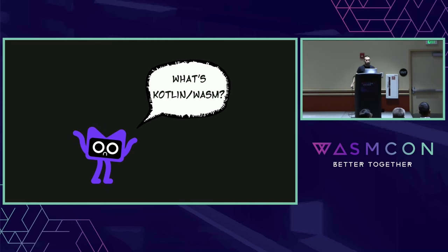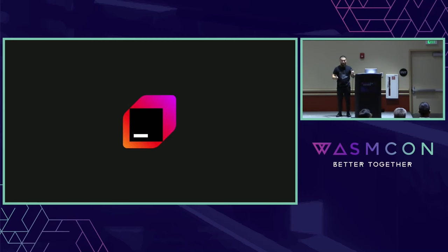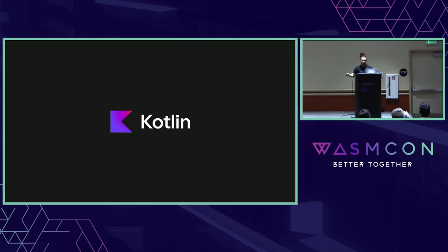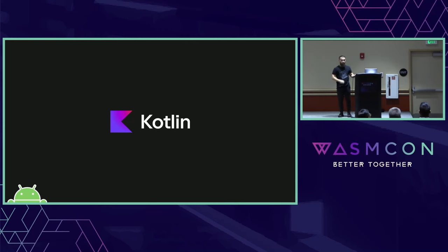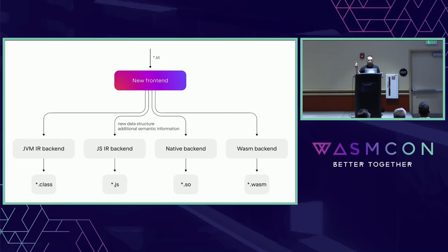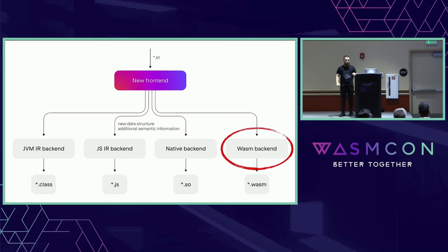So what is Kotlin Wasm? JetBrains is a company you may know because of a lot of nice IDEs for different languages — for Java, for Rust, for C. But also this is the company that created the language Kotlin. Someone of you may know Kotlin because of Android or as a better Java, but actually Kotlin is a multi-paradigm and cross-platform language. Right now we have four compilers: for JVM, for JS, for native through LLVM, and the new one for Wasm.